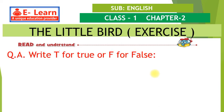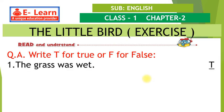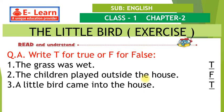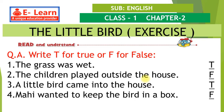Question number 1: write T for true or F for false. First question: the grass was wet — the answer is true. Second: the children played outside the house — the answer is false. Third: a little bird came into the house — the answer is true. Mahi wanted to keep the bird in a box — the answer is false.